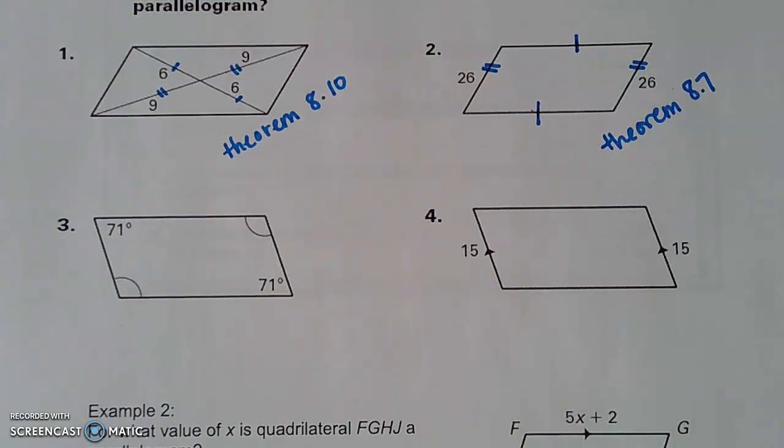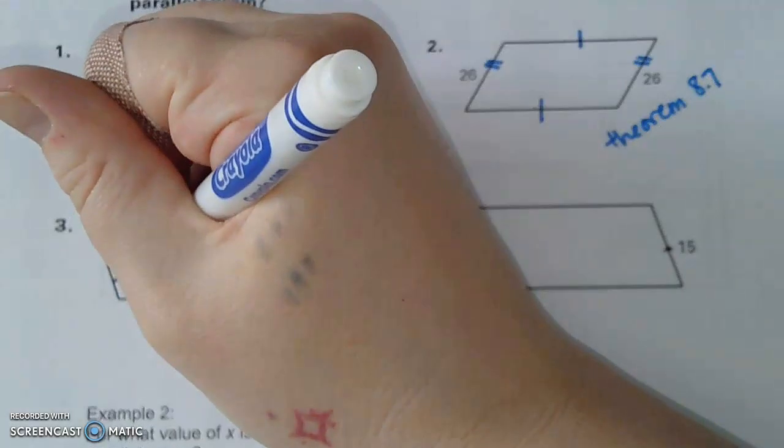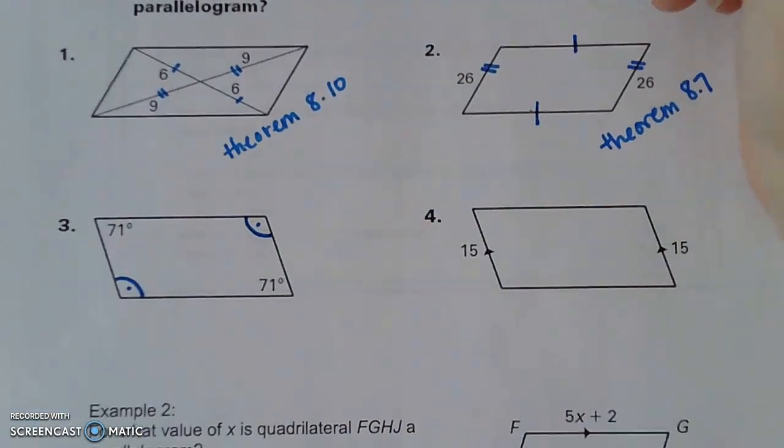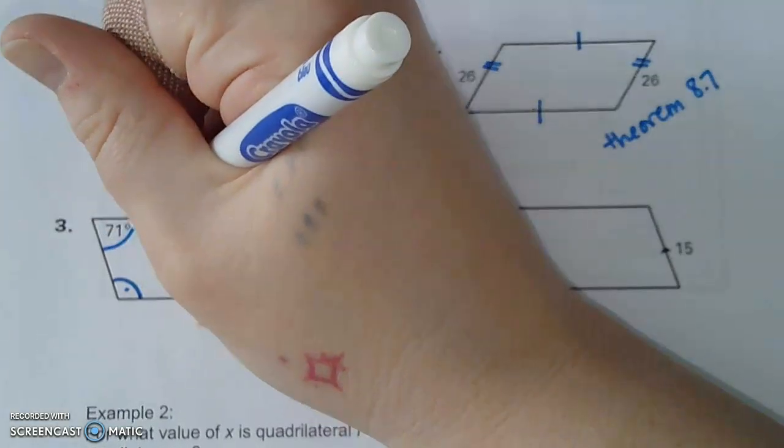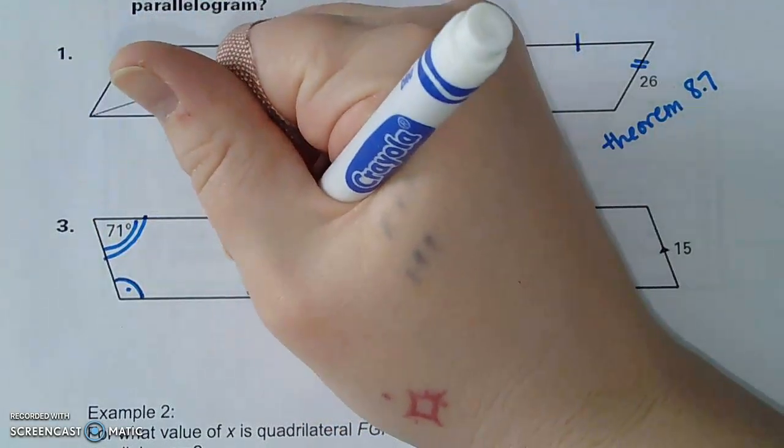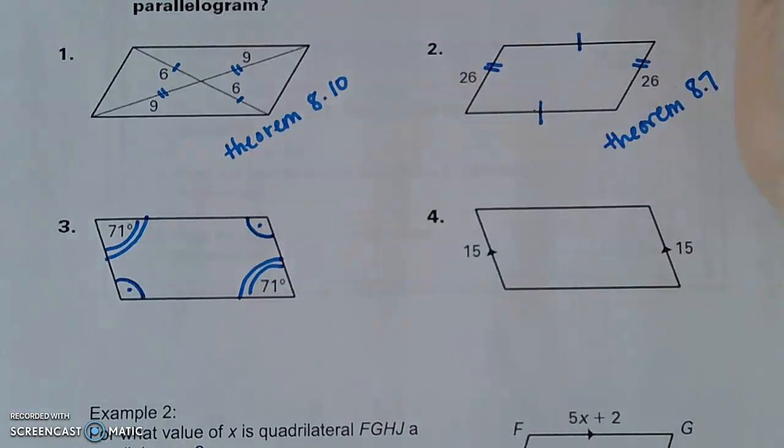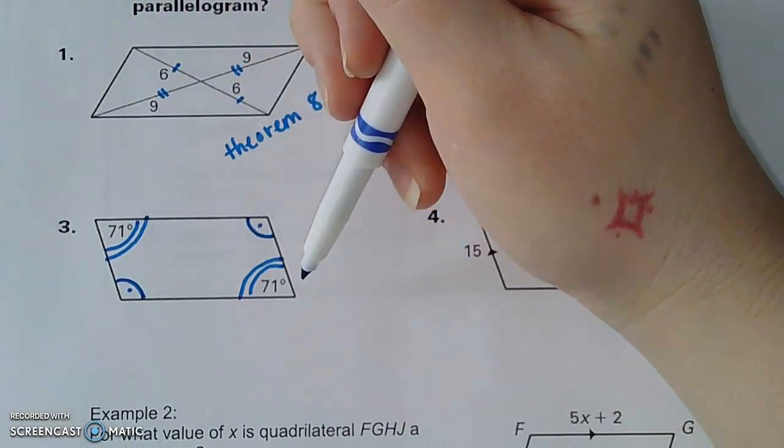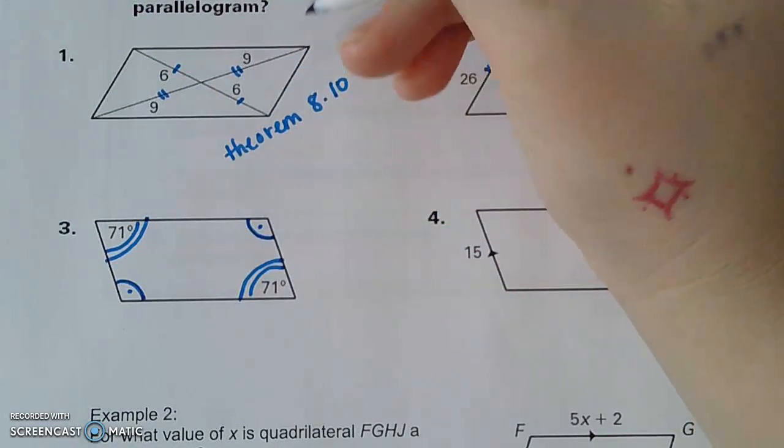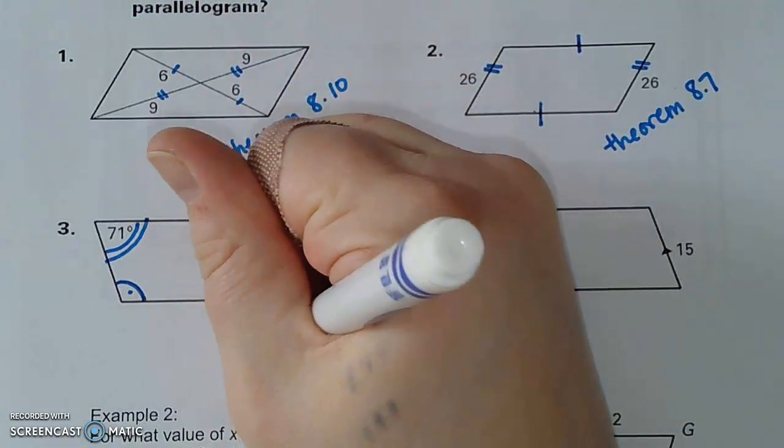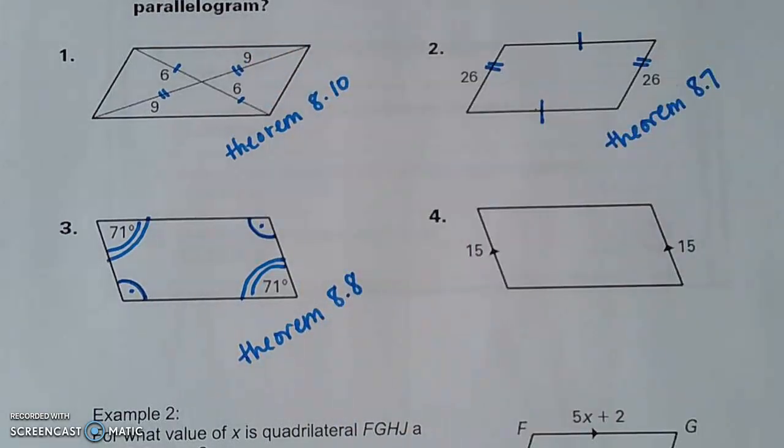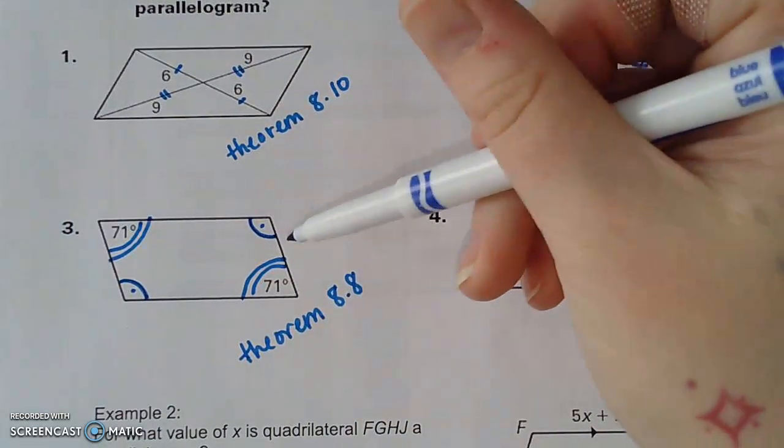Number three, I'm seeing there's a loop here and a loop here. These are congruent to each other because of those loops. I also see 71 and 71 degrees. So I'm putting two loops because those are also congruent. These are opposite angles in the shape that are congruent. This is theorem 8.8. This is telling me that the shape is a parallelogram.